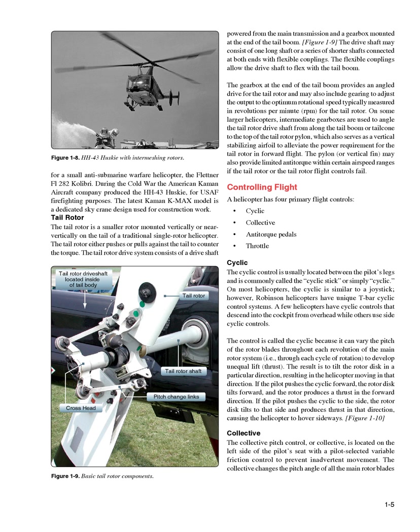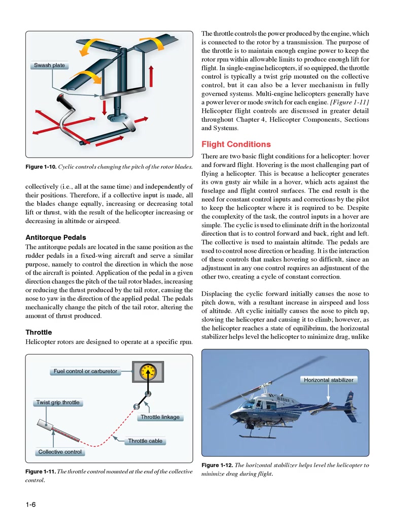Collective. The collective pitch control, or collective, is located on the left side of the pilot's seat with a pilot-selected variable friction control to prevent inadvertent movement. The collective changes the pitch angle of all the main rotor blades collectively — all at the same time and independently of their positions. Therefore, if a collective input is made, all the blades change equally, increasing or decreasing total lift or thrust, with the result of the helicopter increasing or decreasing in altitude or airspeed.